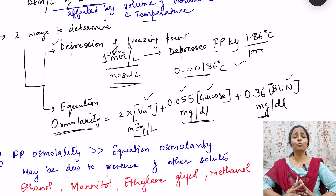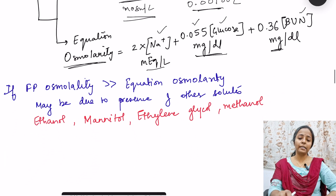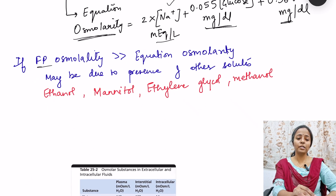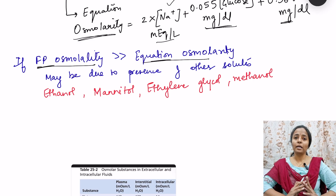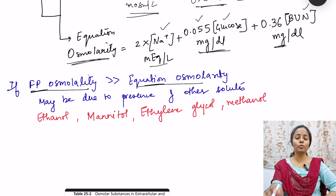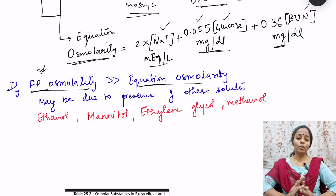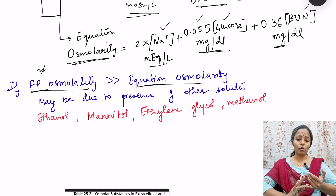If you determine osmolarity by both methods and find a difference — where the freezing point method gives a higher value than the equation method — that means other solutes beyond sodium, glucose, and BUN are present. This is the osmol gap and may indicate the presence of substances like ethanol, methanol, mannitol, or ethylene glycol.